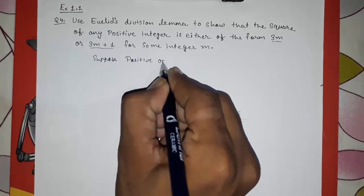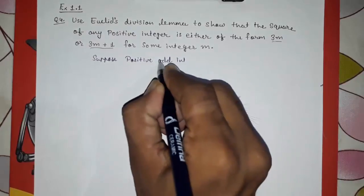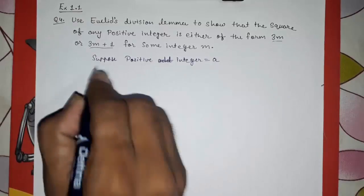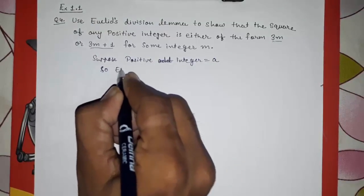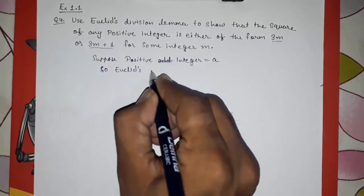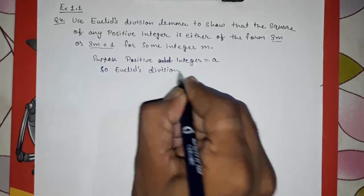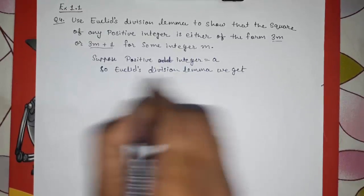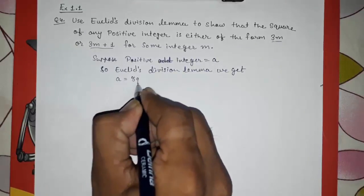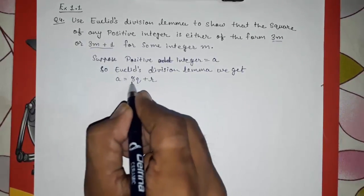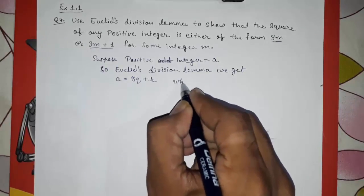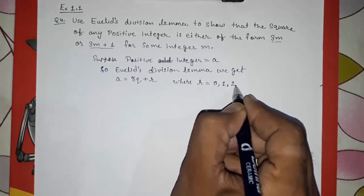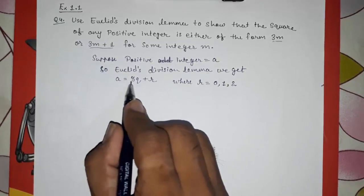Suppose a positive integer is equal to a. By Euclid's division lemma, we get a is equal to 3q plus r. Since we are dividing by 3, what can be our possible values of r?